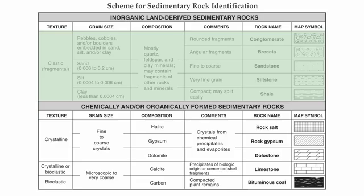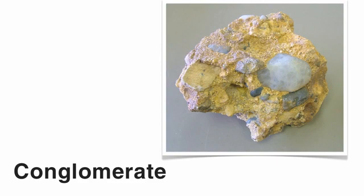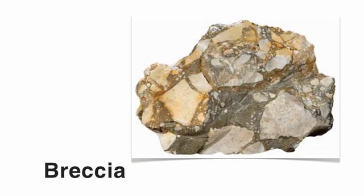Conglomerate is composed of all different sized sediments — cobbles, pebbles, even boulders — compacted and cemented together with sand, silt, and clay. The sediments in a conglomerate are rounded, likely due to flowing water. Very similar is breccia, also made of all different sized sediments compacted and cemented together, but the difference is that breccia sediments are not rounded — they are more angular, pointy, or jagged.